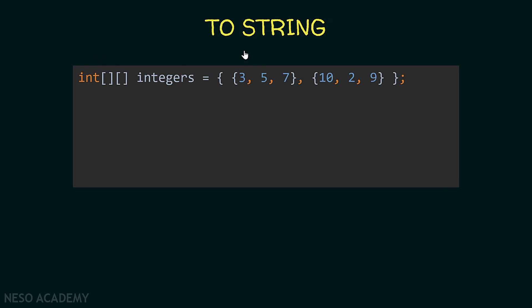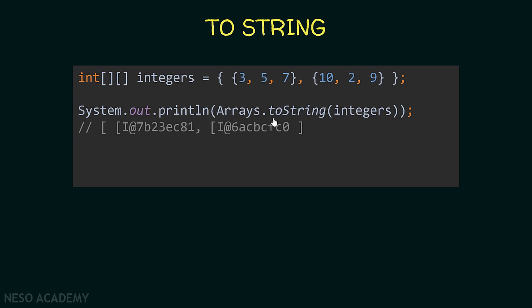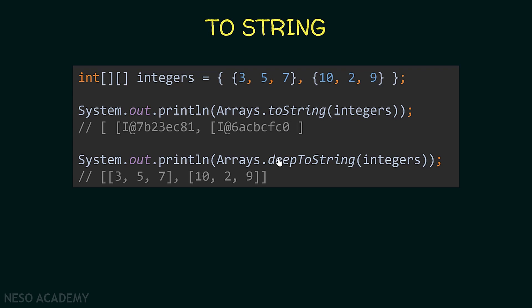Now let's try to use the toString method to print a 2D array. I'm calling Arrays.toString and passing the integers array as a parameter. The output shows our array contains two elements — but each element is an array, so we just see the address of each inner array. To get the string representation of the inner arrays there is another method called deepToString. This method calls toString on the 2D array and also on the arrays inside it, so now we see the full string representation of both the first and the second inner arrays. That's it — thanks for watching and I'll see you in the next video.